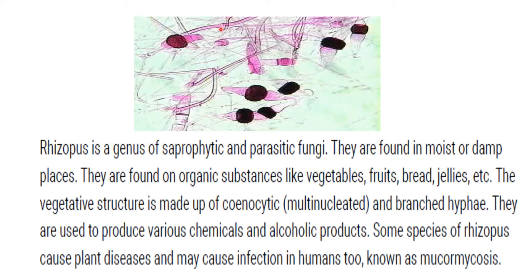The vegetative structure is made up of coenocytic hyphae, meaning there is no septa, and they are multinucleated with branched hyphae. They are used to produce various chemicals and alcoholic products. Some species of Rhizopus cause plant diseases and may cause infection in humans, known as mucormycosis.